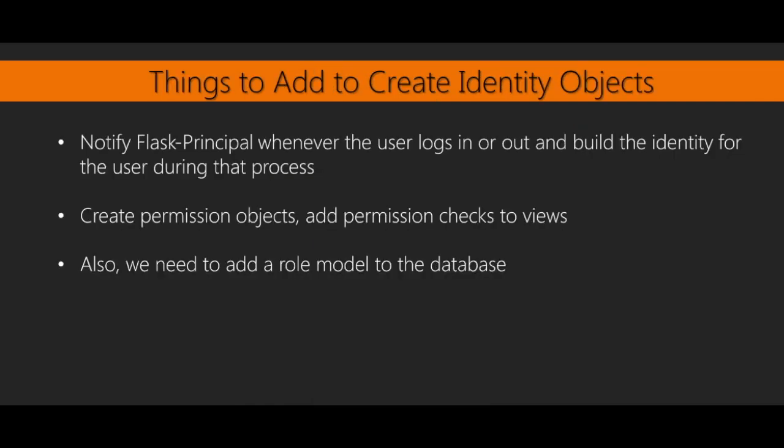So there are a couple of things we need to add to get this working. First is to notify Flask-Principal whenever the user logs in or out and build the identity for the user during that process. Secondly, create permission objects and add permission checks to views. Also, we need to add a role model to the database. The first thing we will do whenever we use a new Flask extension is to install it, so head to the terminal and install Flask-Principal with pip.